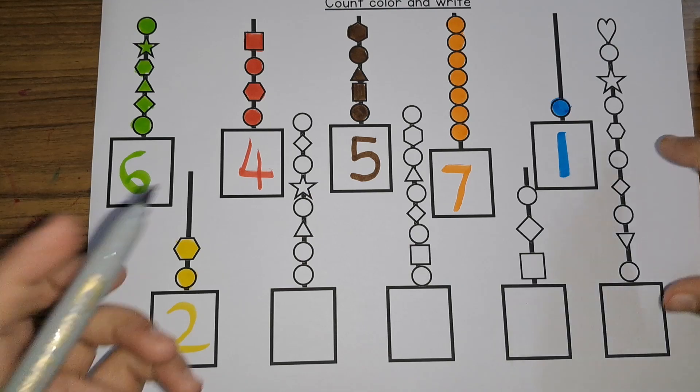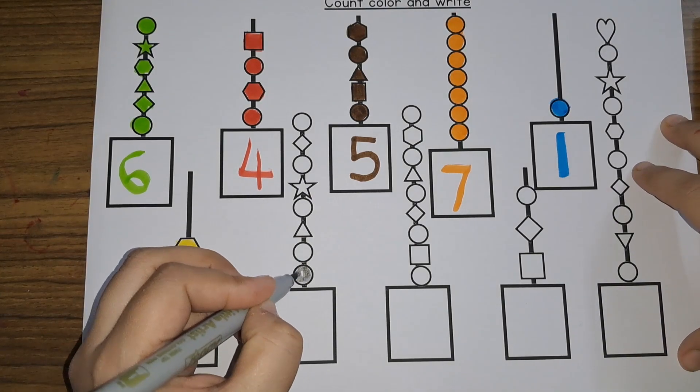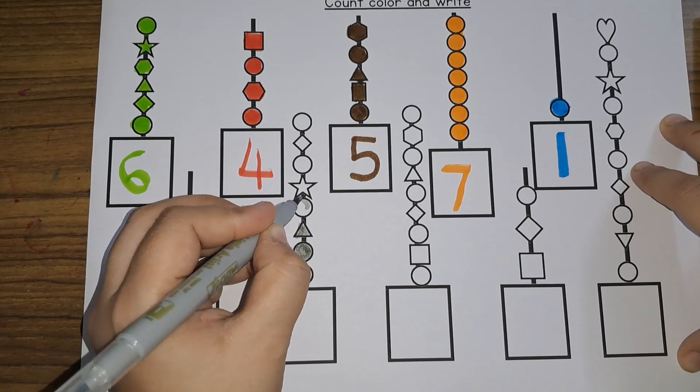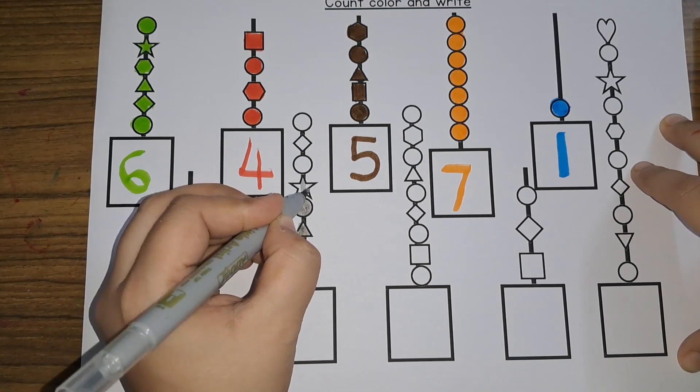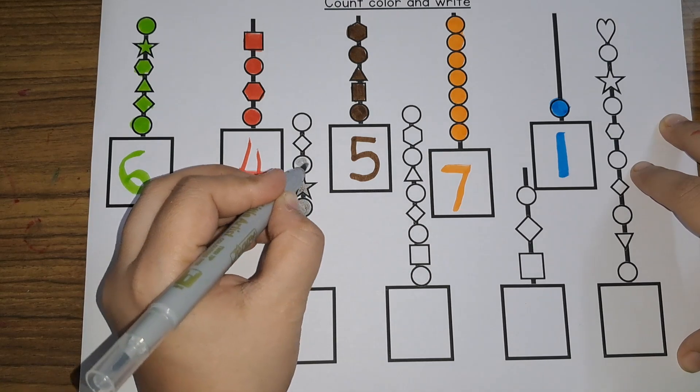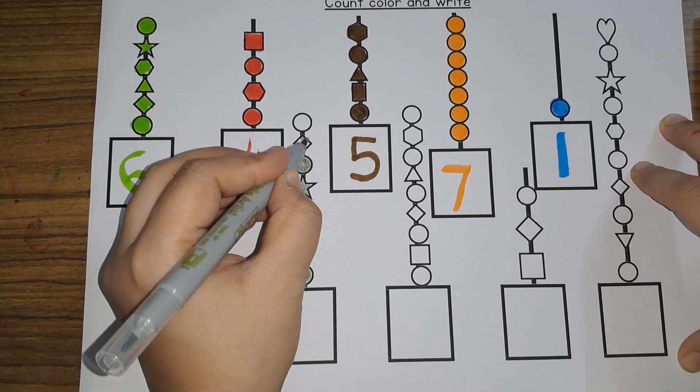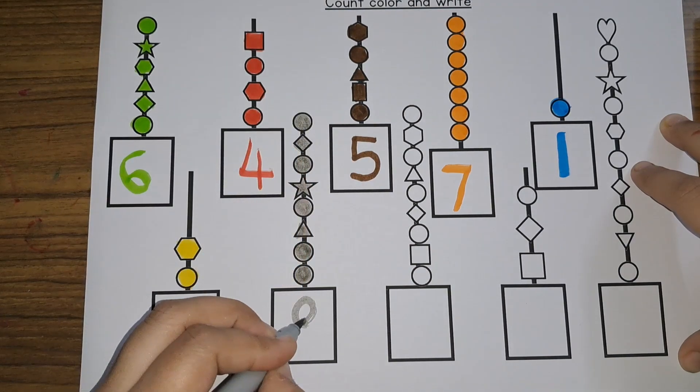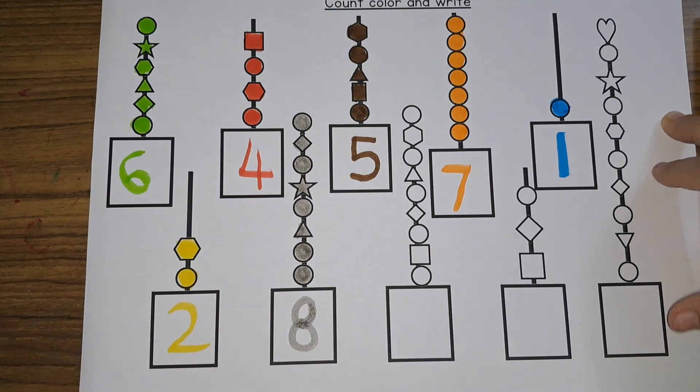Then there is 1, 2, 3, 4, 5, 6, 7, 8. Number 8. Eight beads.